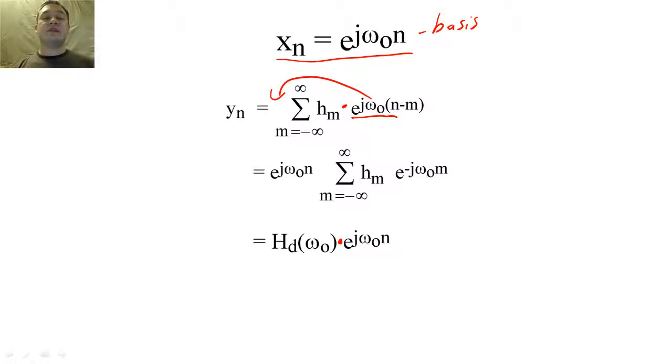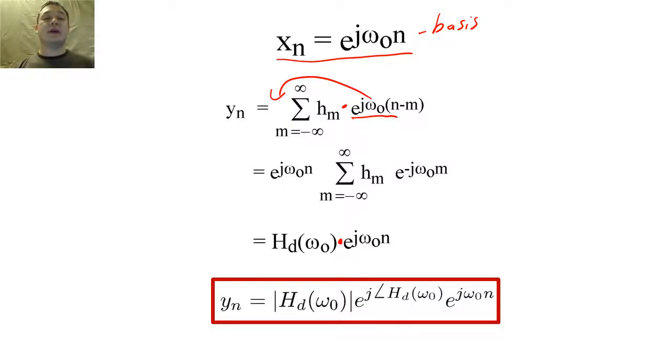We can alternatively write this Y of n to show that Y of n will equal X of n scaled by the magnitude of the frequency response of the filter evaluated at omega nought.